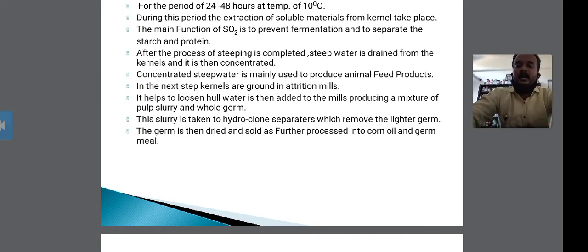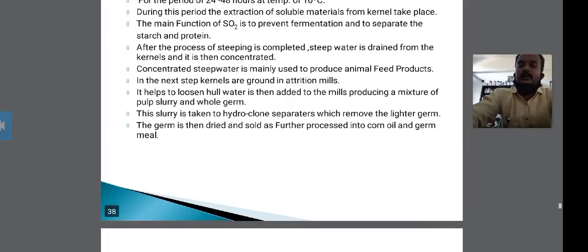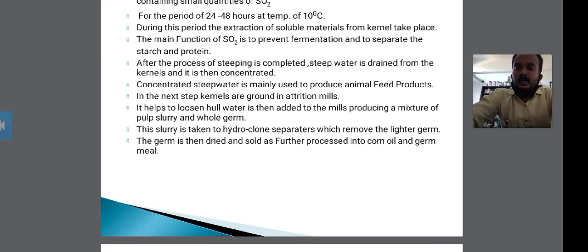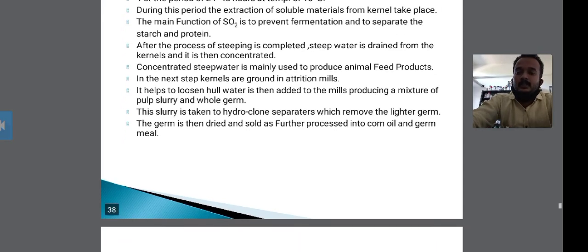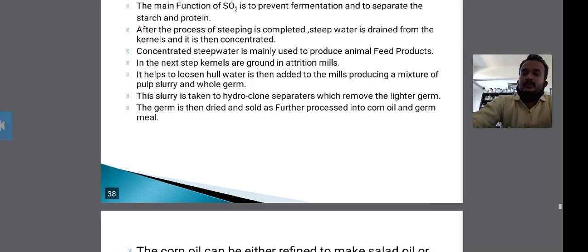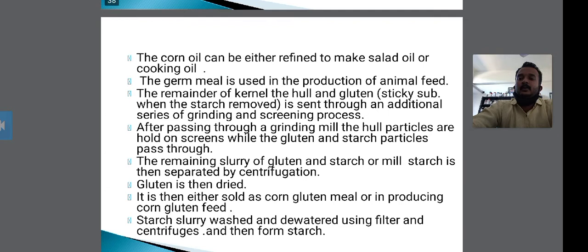Water is added to the mill producing a mixture of pulp slurry and whole germs. This slurry is taken to a hydrocyclone separator which removes the lighter germs. The germs are then dried and sold for further processing into corn oil and germ oil. This corn oil can be either refined to make salad oil or cooking oil.